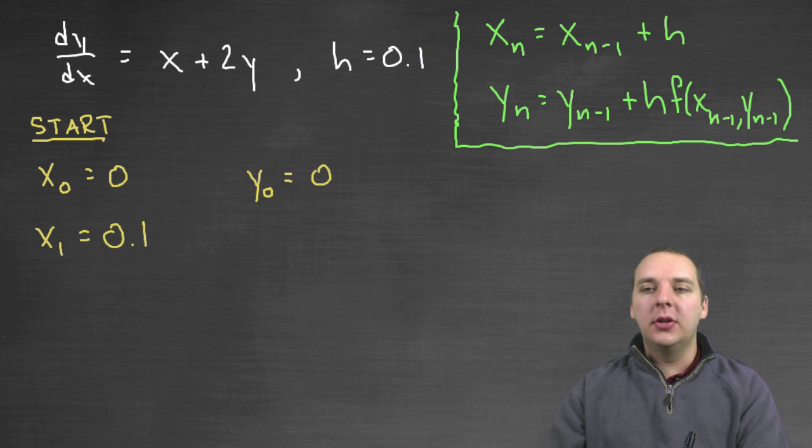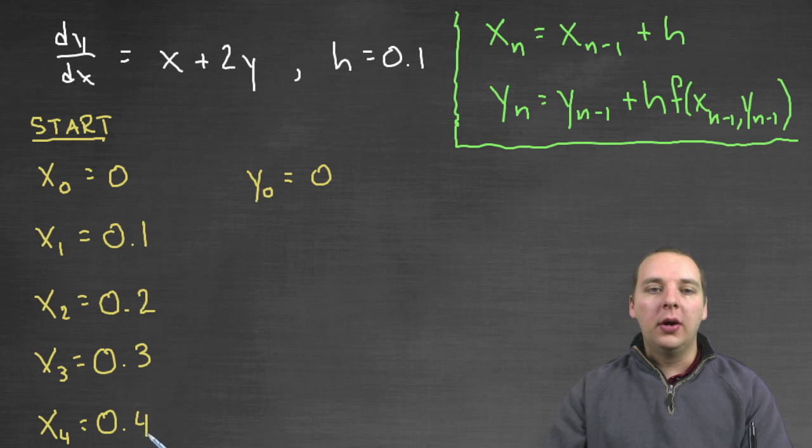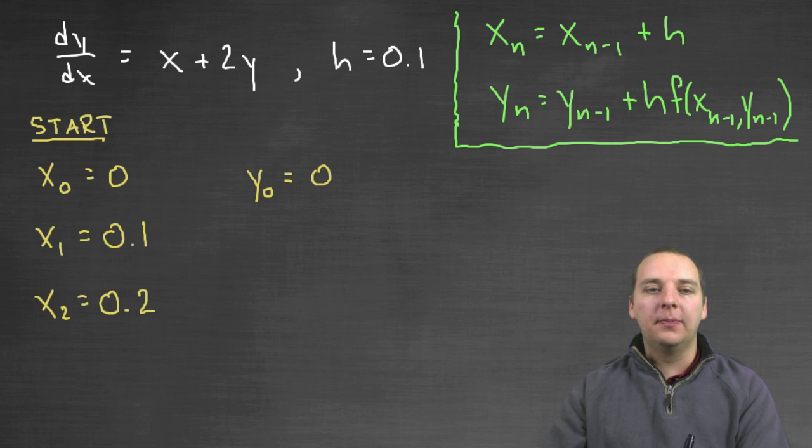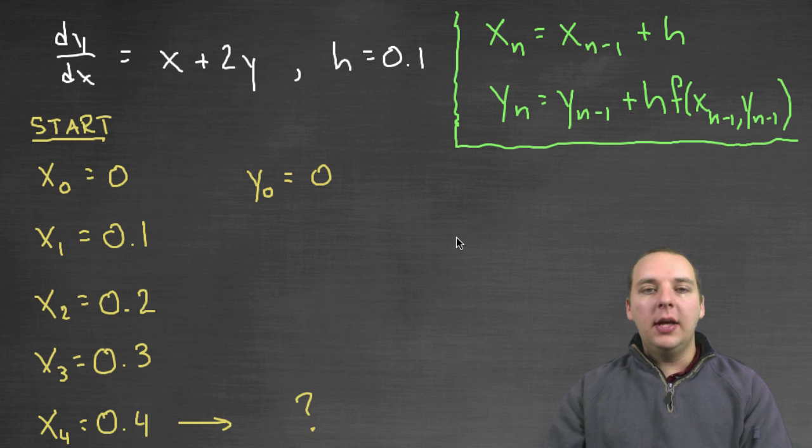Here we go, we have our start here. And based off of the step size of 0.1, we know that our next x value will be 0.1, because that's 0 plus the step size. And then just because it's easy, I'm just going to go ahead and find the other x's. The next x value is 0.2, the next coordinate is 0.3, and the last one is 0.4. And we're really looking for this y value, because that's what the initial problem was asking.